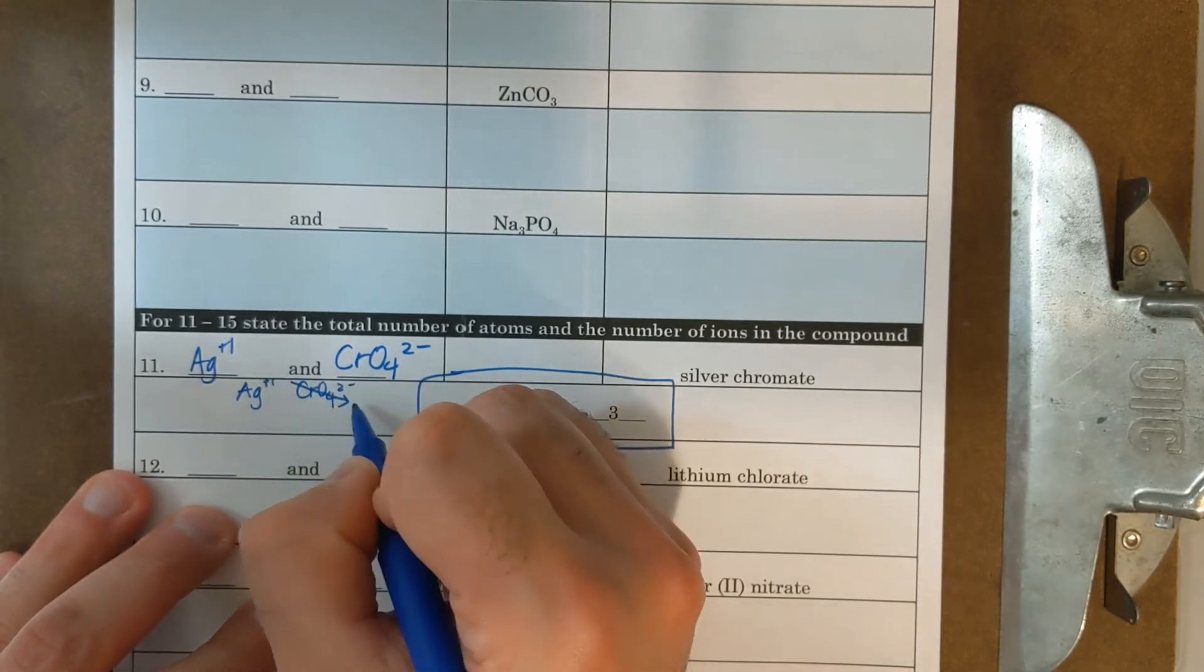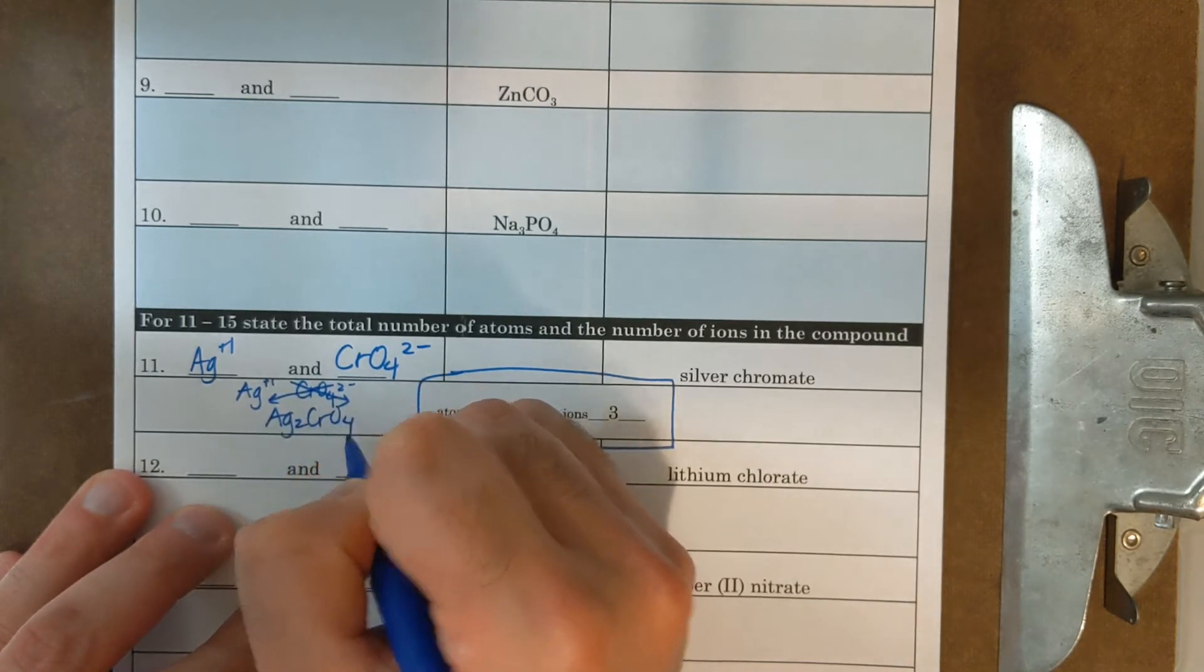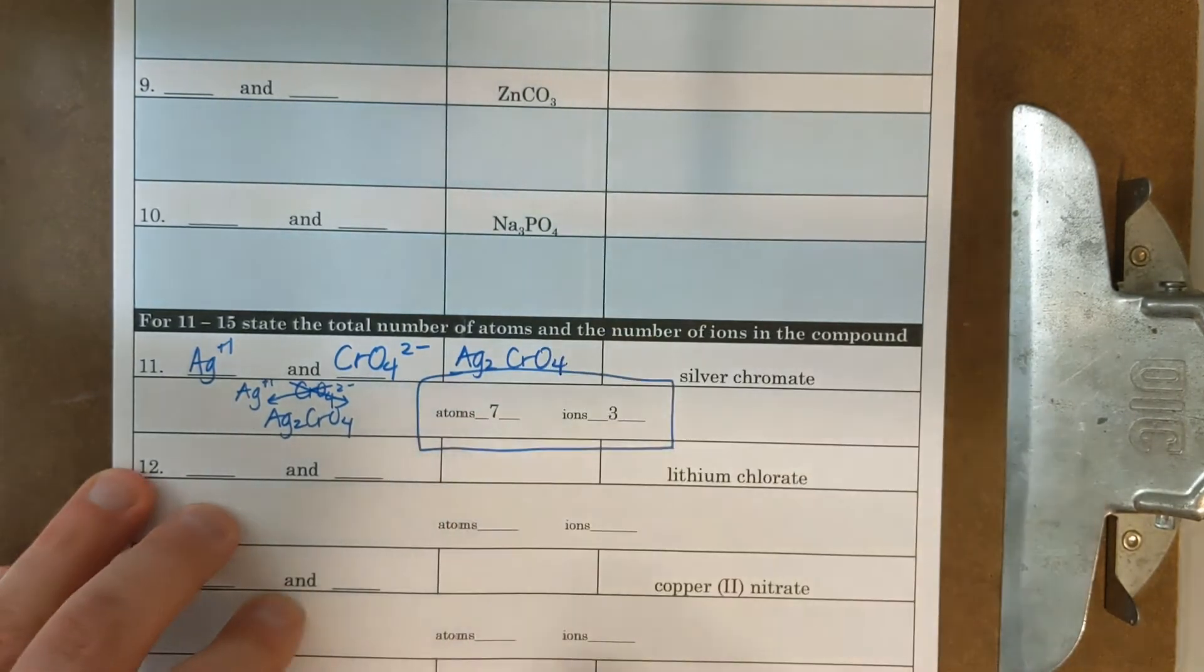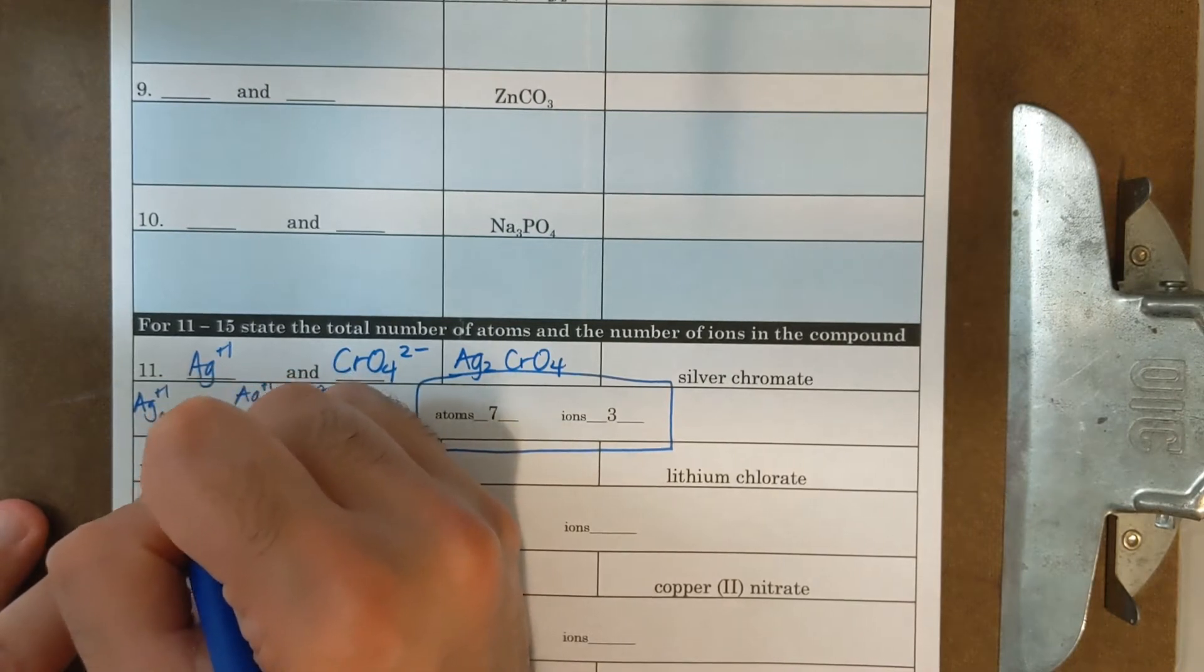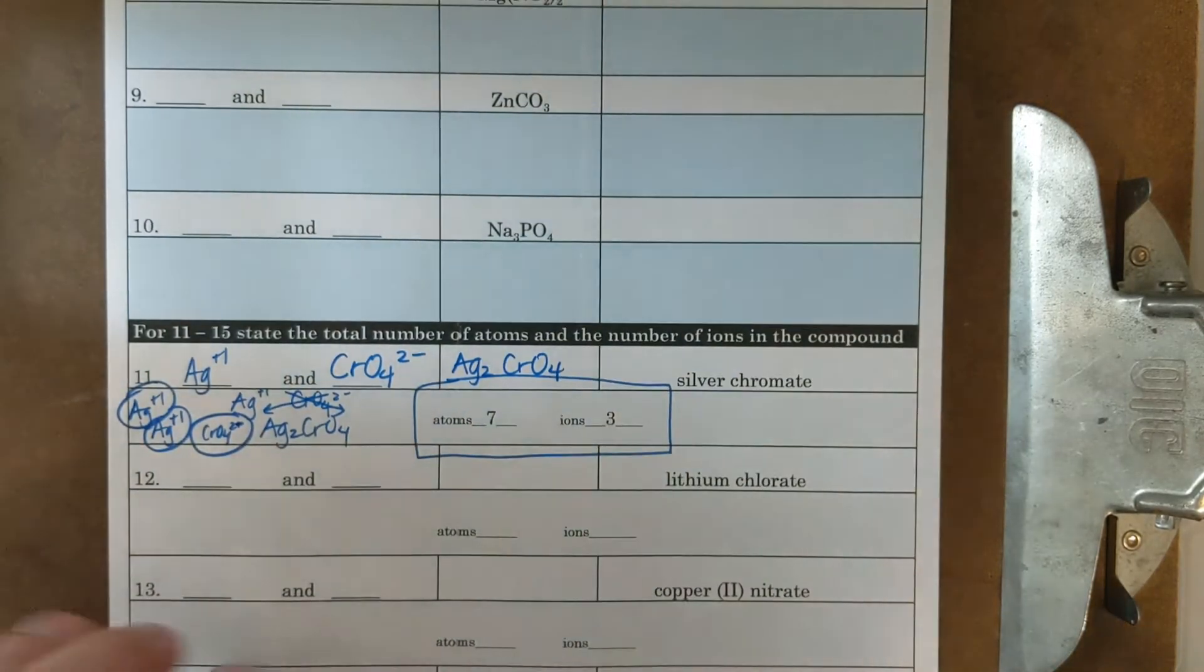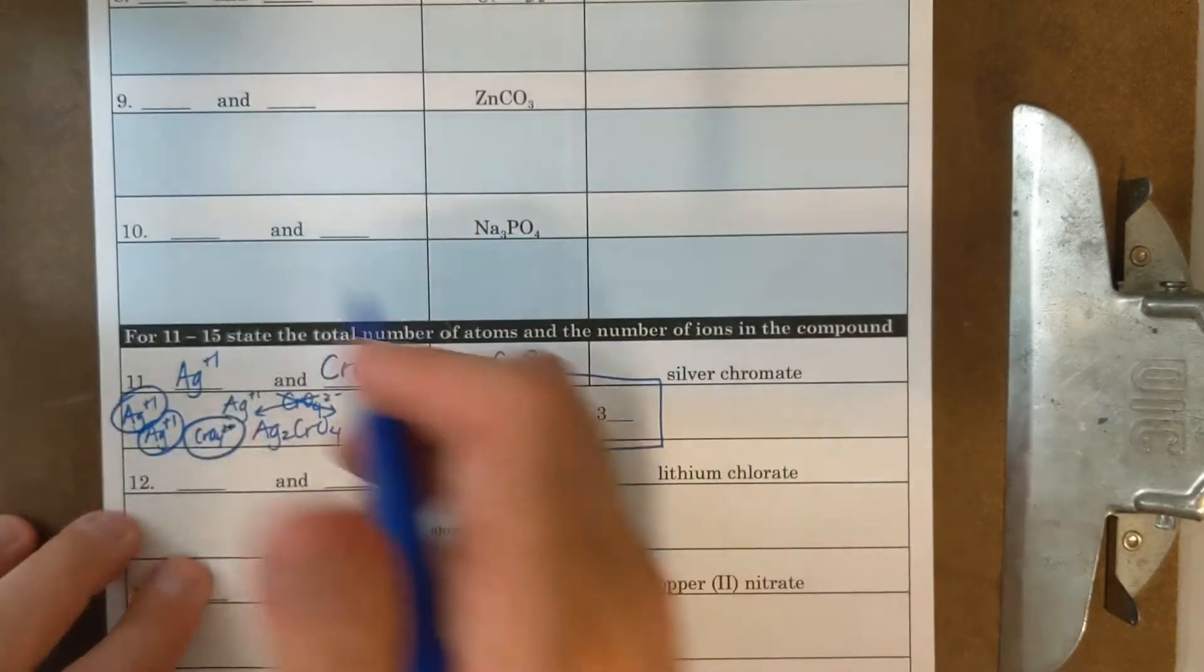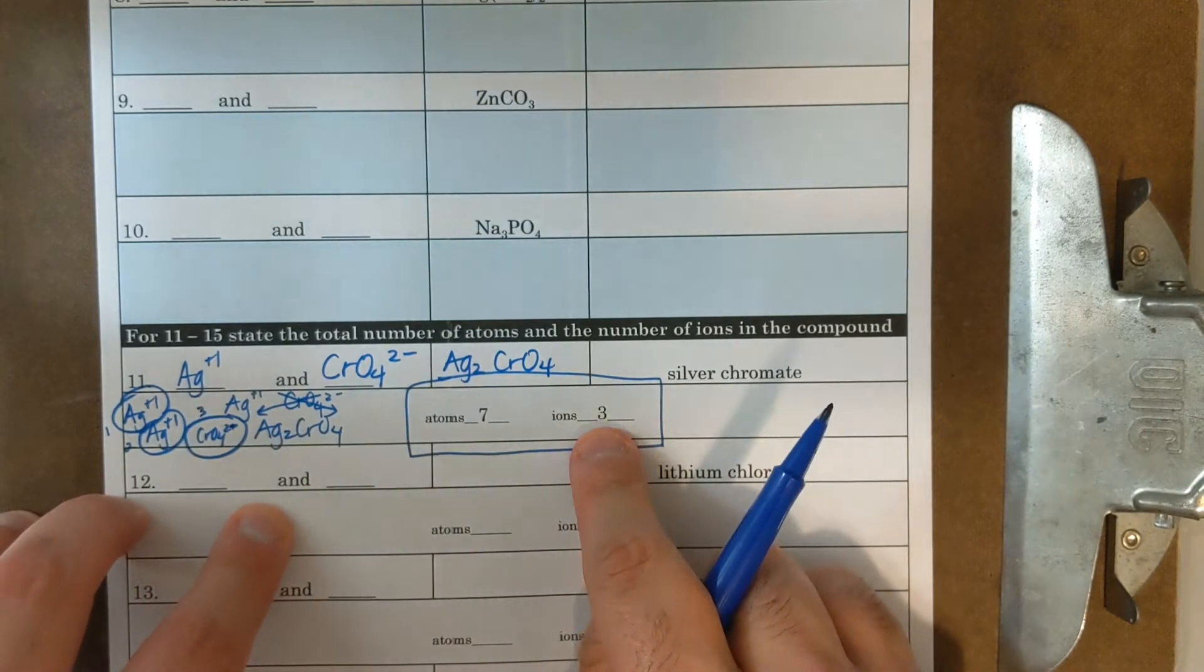And I say it again, Roman numerals are for transition metals that form more than one charge. And now chromate is a polyatomic ion. If you look on your polyatomic ion sheet, it's CRO four two minus. I could do the crisscross method plus one CRO four two minus. I need one CRO four and two AGs. So that is my formula, AG two CRO four.